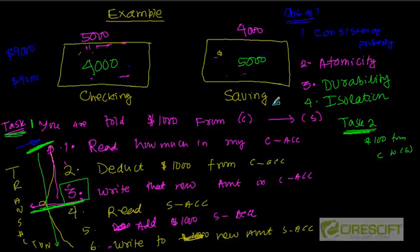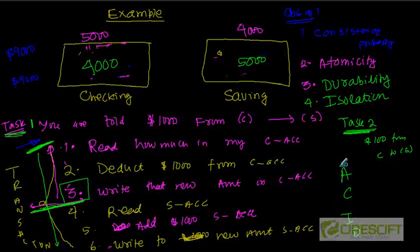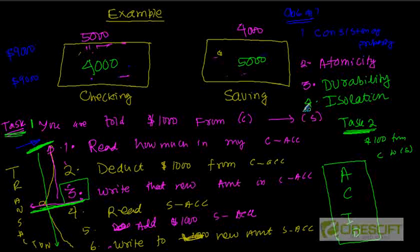These are the four fundamental properties of a transaction, called the ACID properties: Atomicity, Consistency, Isolation, and Durability. Oracle — and in fact any database — is implemented to respect these ACID properties. Whenever a transaction is used, the transaction by default will observe all four of these properties.